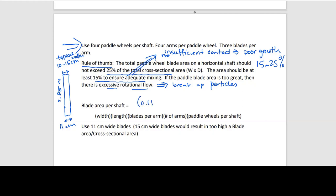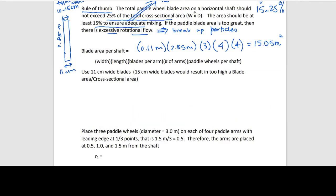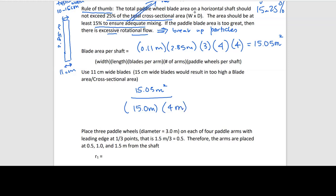The total blade area is: 0.11 m × 2.85 m × 3 blades/arm × 4 arms/wheel × 4 wheels/shaft = 15.05 m². For cross flow, we divide by the cross-sectional area: 15.05 / (15.0 × 4.0) = 0.25, or 25%. We are right at the upper limit but within the acceptable range.